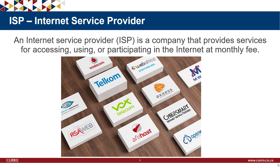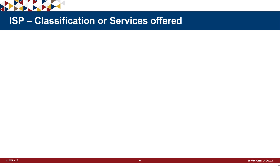An ISP — Internet Service Provider — is a company that provides services for accessing, using, or participating in the internet, at a monthly fee or other fee structure. Examples in South Africa include Vodacom, Telkom, Vox, and Web Africa, among others. ISPs offer different classifications of services, so let's look at what an ISP can offer you as a client.